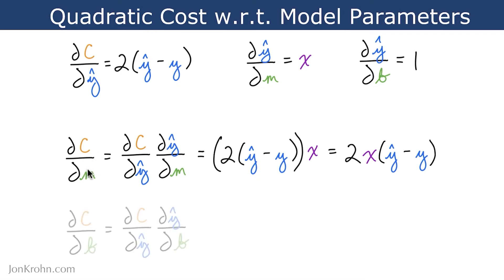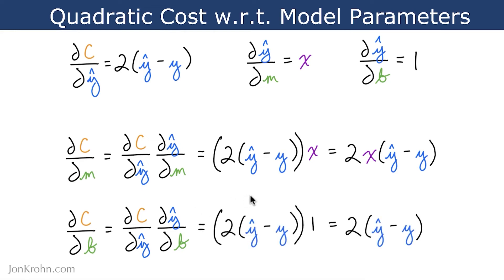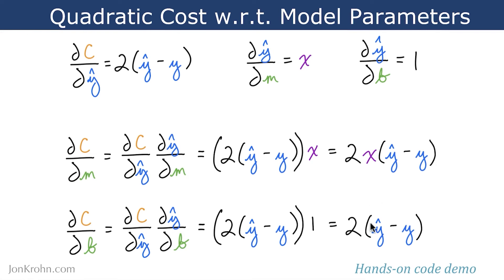From there, it's pretty simple to calculate del c del b. We have del c del y-hat, and we multiply that by del y-hat del b. The del y-hats cancel out, leaving just del c del b. Since del y-hat del b is just 1, we multiply del c del y-hat by 1, and we find that del c del b is equal to 2 times y-hat minus y. Now that we have our two partial derivatives, let's go back to our Jupyter notebook and plug in the real-world values to confirm that these manual derivations come out to the same results as automatic differentiation in PyTorch.